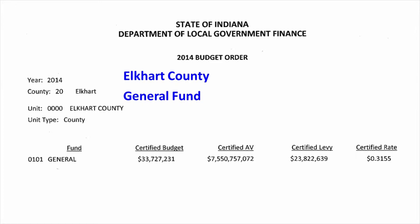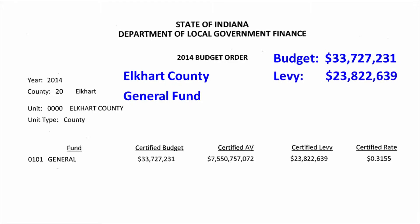Let's look at Elkhart's 2014 general fund. Start with the budget — the total amount that the departments and agencies of the county figured they'd need to deliver services in 2014. Elkhart is a pretty big county, so the budget is a pretty big number: more than $33 million. The levy is the amount to be raised from property taxes, but it's only about two-thirds of the total budget — $23.8 million.